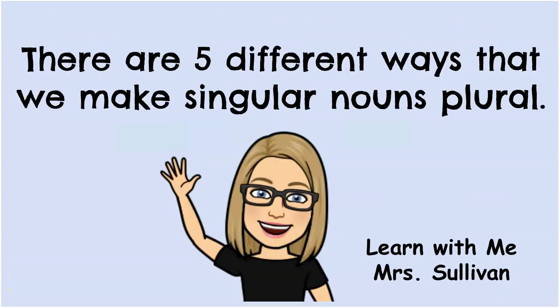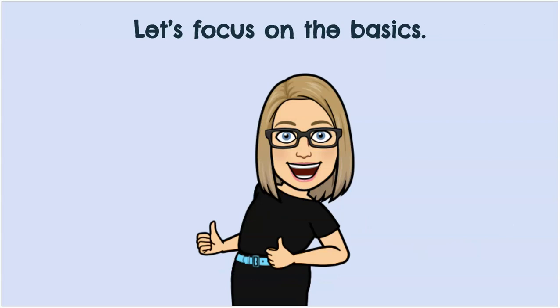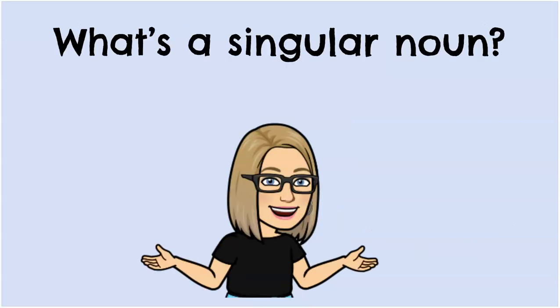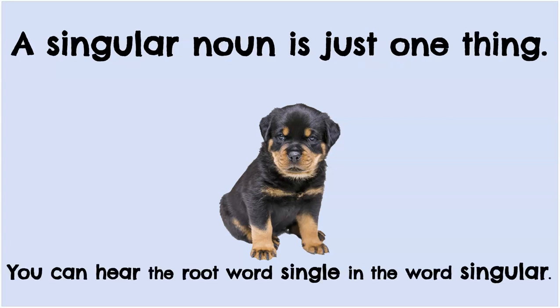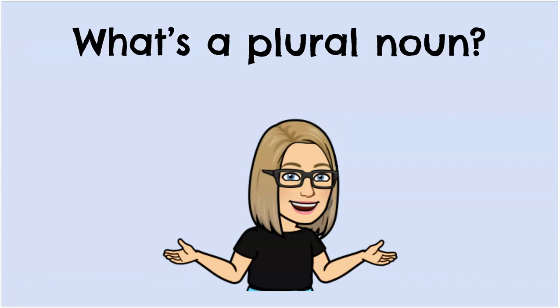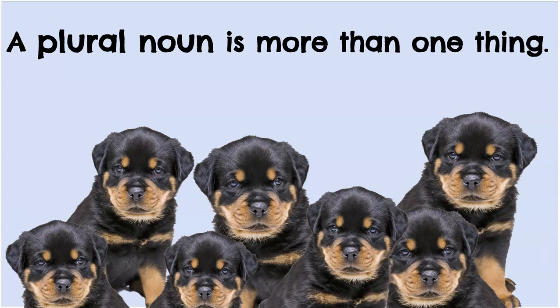There are five different ways that we make singular nouns plural. We'll learn about all five ways, but first let's focus on the basics. What's a singular noun? Singular means just one — a singular noun is just one thing. You can hear the root word 'single' in the word singular. What's a plural noun? Plural means more than one. A plural noun is more than one thing.